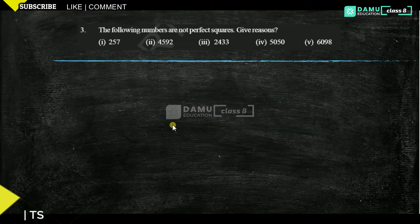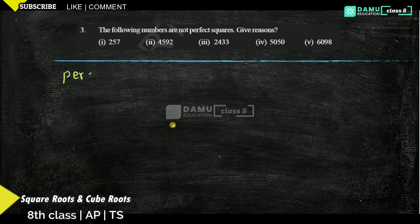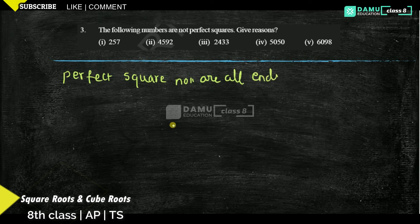Now we will discuss the third question: the following numbers are not perfect squares — give reasons. Actually, perfect square numbers all end with 0, 1, 4, 6, or 9 only.